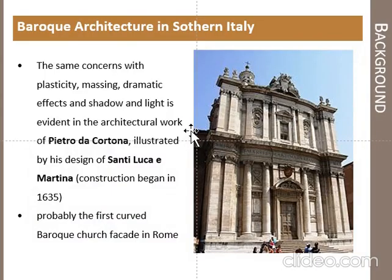Baroque architecture style in South Italy. Cortona designed the church of Santi Luca e Martina. The facade has a curved shape and is probably the first curved Baroque church in Rome. It has plasticity, massing, dramatic effects, and the use of shadow and light in the facade of the church.